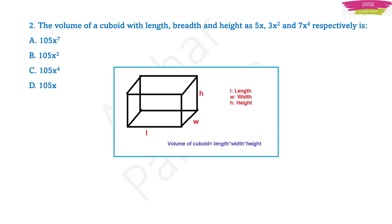It can be in terms of x or just numbers. What you have to do here is multiply 5x, 3x² and 7x⁴. You will get x⁷ because x¹ × x² × x⁴ means you add the powers: 1 + 2 + 4 = 7. Check which option has x⁷ — it is option A. To confirm, multiply the coefficients: 5 × 3 × 7. 5 × 3 is 15, and 15 × 7 is 105. So 105x⁷ is the correct answer.